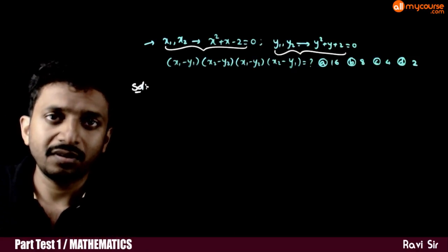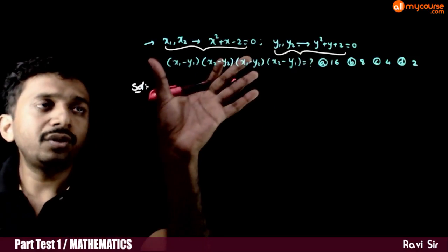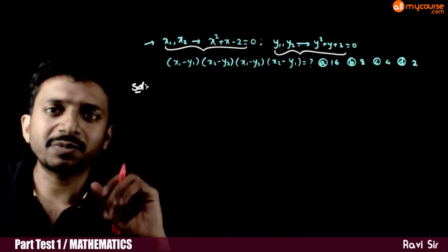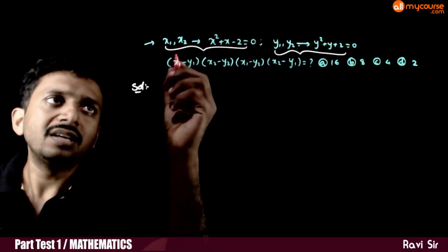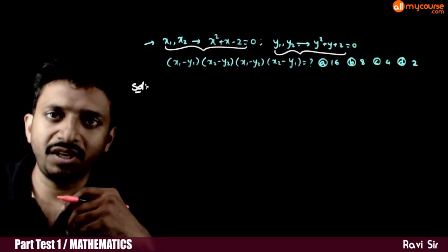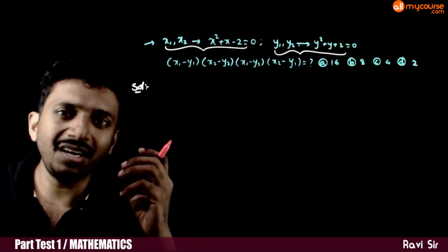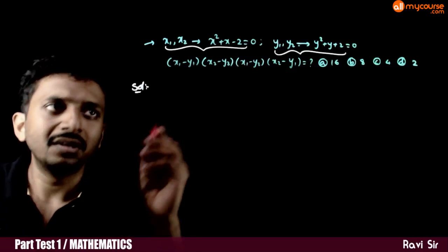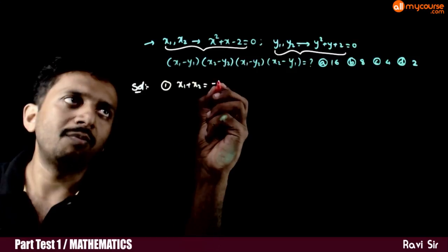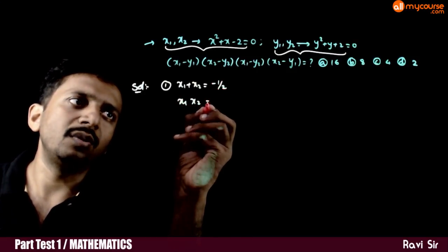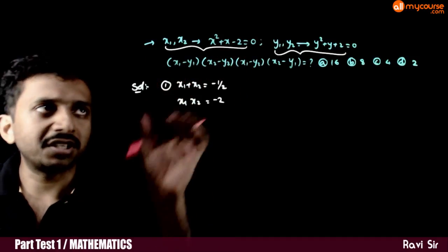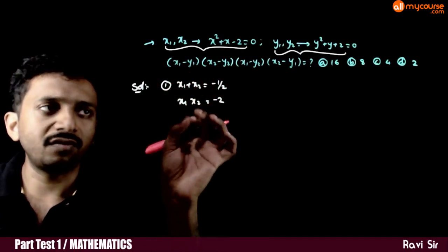Again, a standard question. First, how do we use the given information? If x1 and x2 are the roots of a quadratic equation, I can write three different types of equations. The first way: x1 plus x2 equals minus b by a, and x1 times x2 equals c by a. So the sum of the roots is minus 1, and the product of the roots is minus 2.